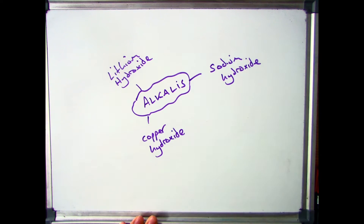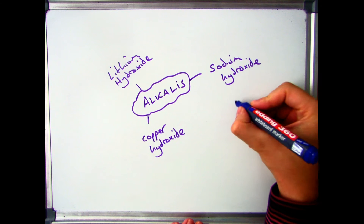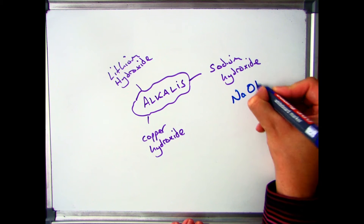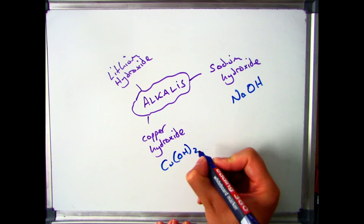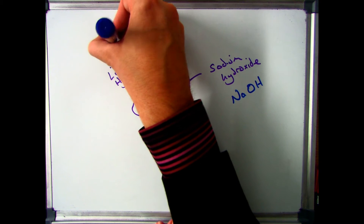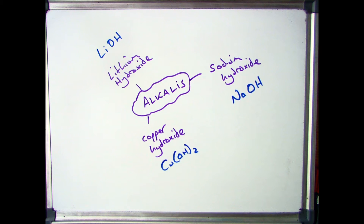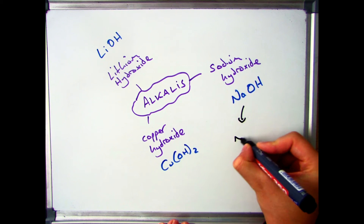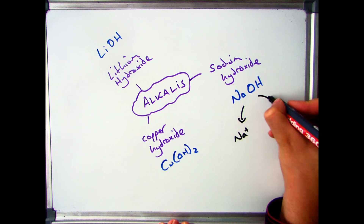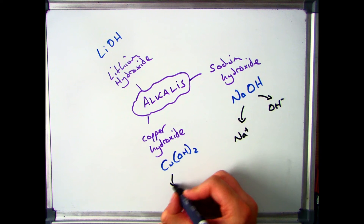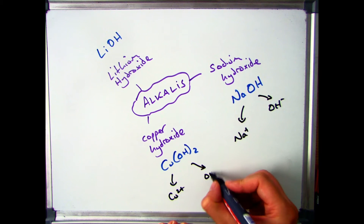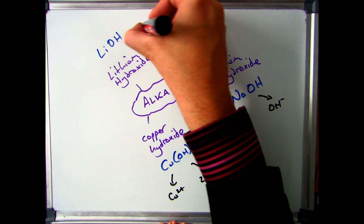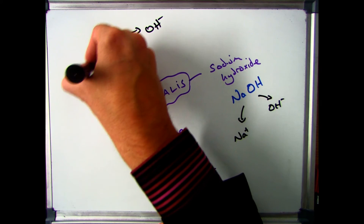If I draw the actual chemical equations for each of these, you'll see something that's similar between each of them. Sodium hydroxide is NaOH, copper hydroxide is Cu(OH)2, and lithium hydroxide is LiOH. Breaking these down into ions: sodium hydroxide gives an Na+ ion and an OH- ion; copper hydroxide gives a Cu2+ ion and two OH- ions; and lithium hydroxide gives an OH- ion and an Li+ ion.